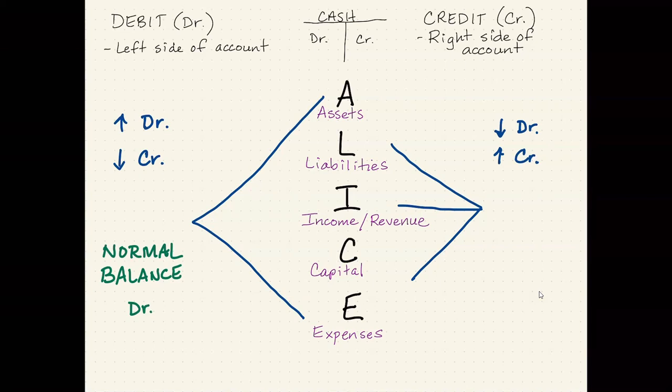Now, L, I, and C, liabilities, income or revenue, and capital, I join those on the right because they're increased on the right. So that also means the normal balance will also be on the right, which we know the right is the credit side of the account.